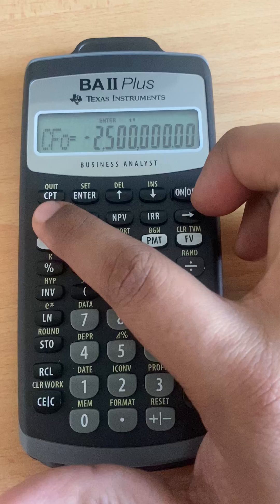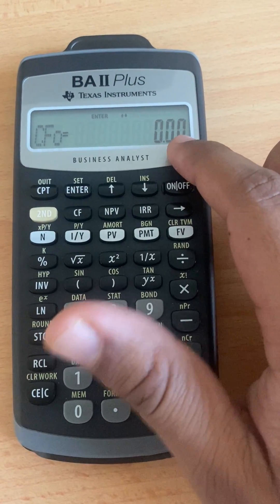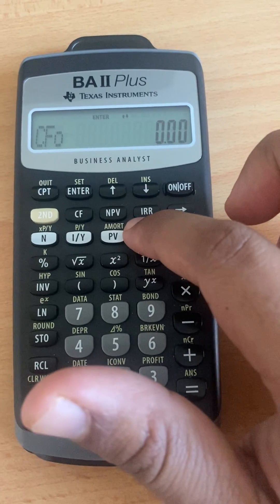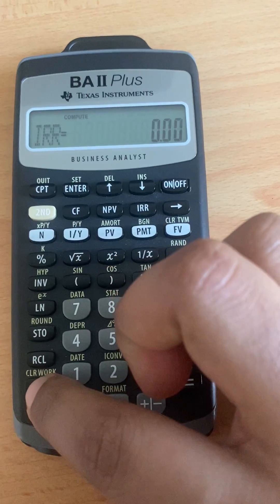So we go for second, then we clear work. So we get CF0 is 0, so IRR also 0, because we already second, clear work.